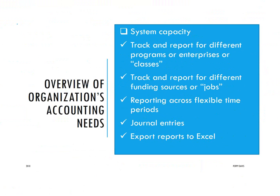In terms of systems capacity, you need to be able to track and report for different programs — called classes in QuickBooks, or enterprises in other programs. You also need to track and report for different funding sources, understanding that's two different levels of accounting. You need reporting across flexible time periods. You need the capacity in the system to do journal entries — any standard accounting system will have this, but a made-up system in Excel will not. You also want to be able to export your reports to Excel.